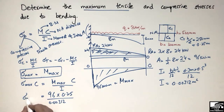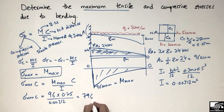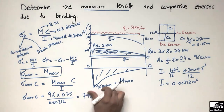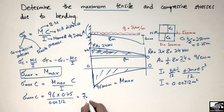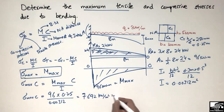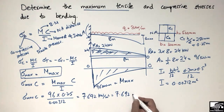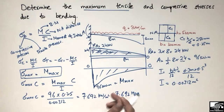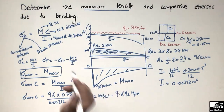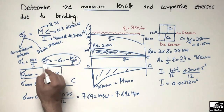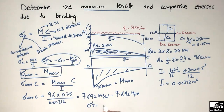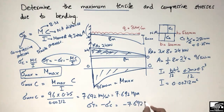Plugging these values in, we find the maximum compressive stress: σ_max_c = (96 × 0.25) / 0.003125 = 7,692 kN/m². Converting to megapascals by dividing by 1000 gives 7.692 MPa. This is the maximum compressive stress. The maximum tensile stress is the negative of that: σ_t = −7.692 MPa.